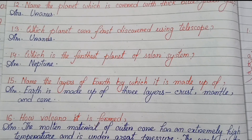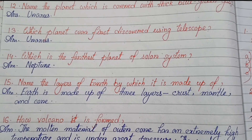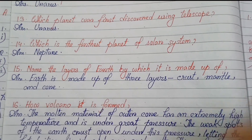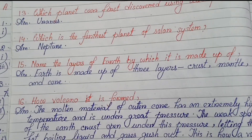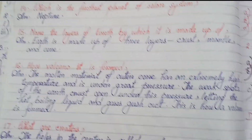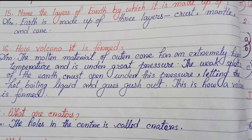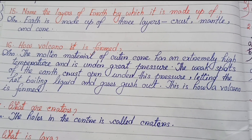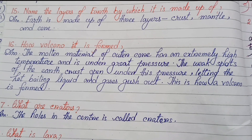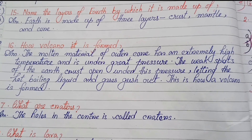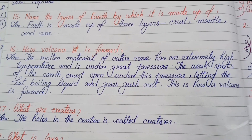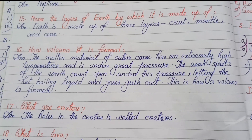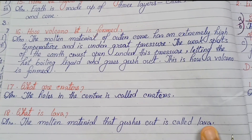Number fourteen: Which is the furthest planet of the solar system? Neptune. Number fifteen: Name the layers of the earth — the earth is made up of three layers: crust, mantle, and core. Number sixteen: How is a volcano formed? The molten material of the outer core has an extremely high temperature and is under great pressure. The weak spots of the earth's crust open under this pressure.